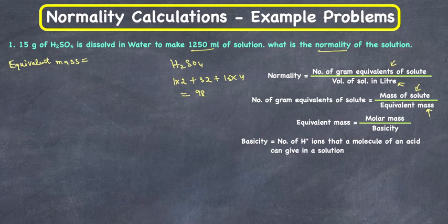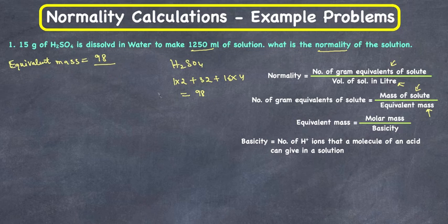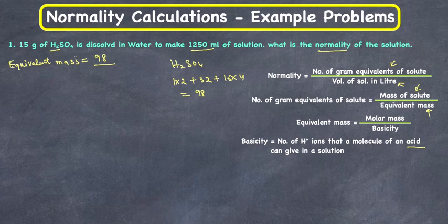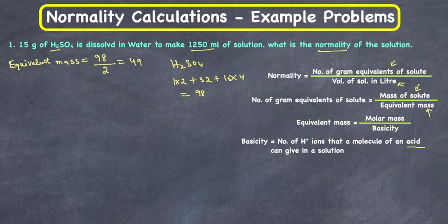So we have 98 divided by basicity, which is the number of hydrogen ions H₂SO₄ can give in solution. H₂SO₄ has H₂, so 2 hydrogens — divided by 2 gives me 49. So the equivalent mass is 49 g/equivalent.